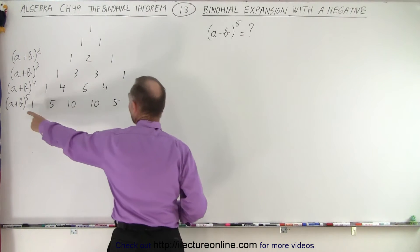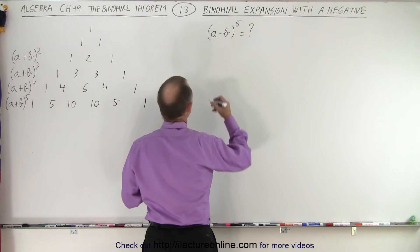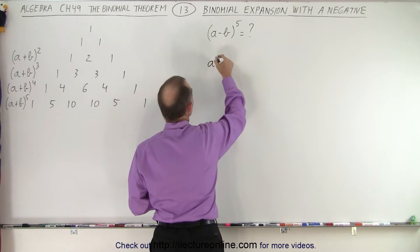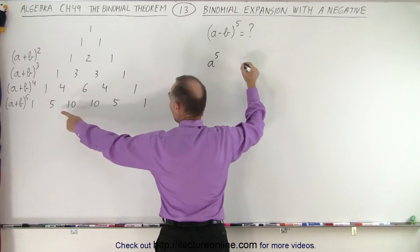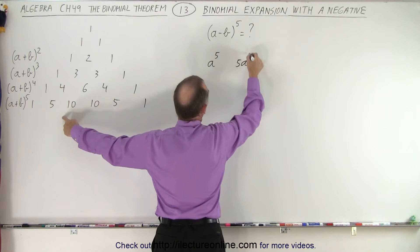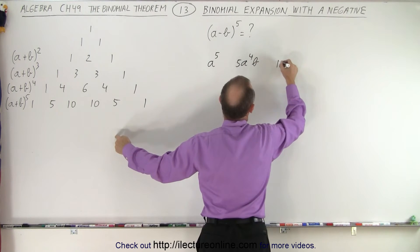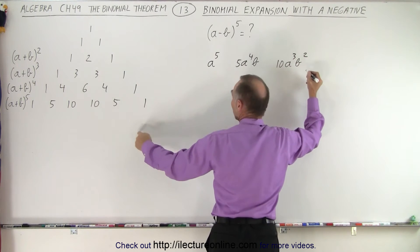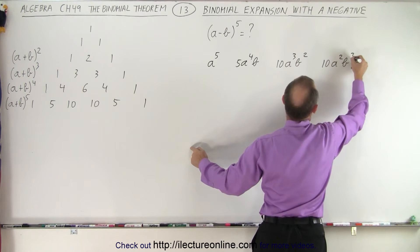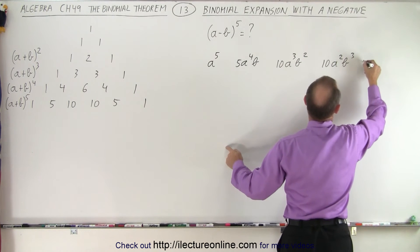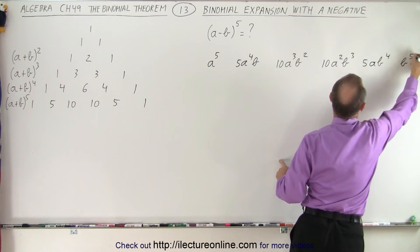Here you can see that a plus b to the fifth power will get these as the numerical coefficients. So that means this would look like: a to the fifth power, five times a to the fourth power b to the first power, ten a to the third power b squared, ten a squared b to the third power, five a b to the fourth power, and one b to the fifth power.